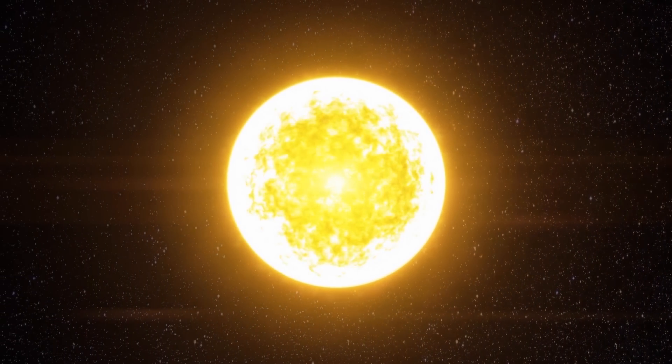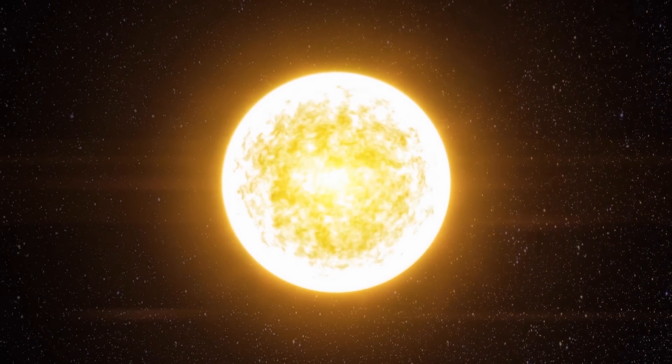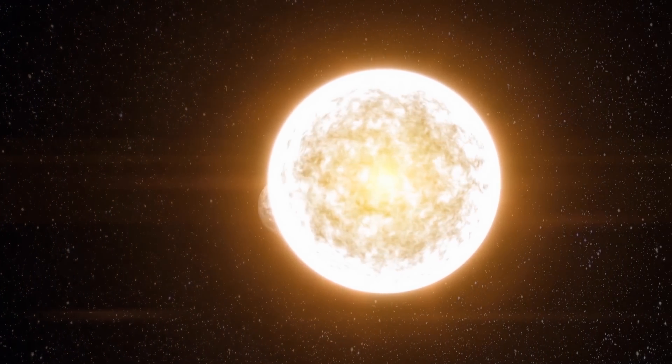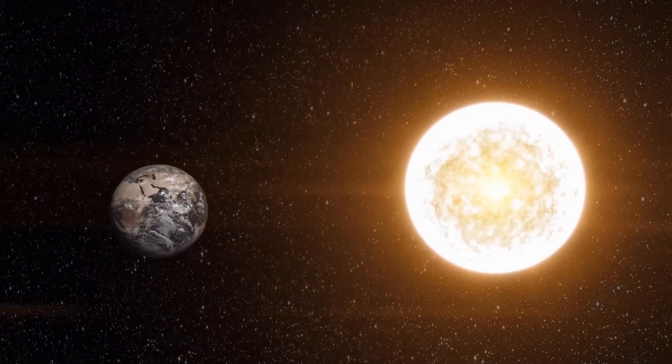Then, about 1 billion years later, the sun will become a white dwarf. It will be like the ember of a fire that has just been put out, still hot, but no longer burning.